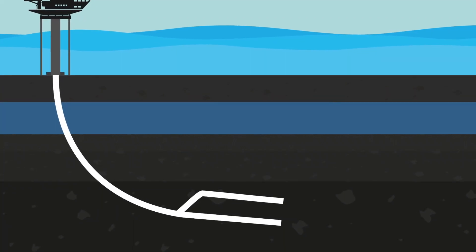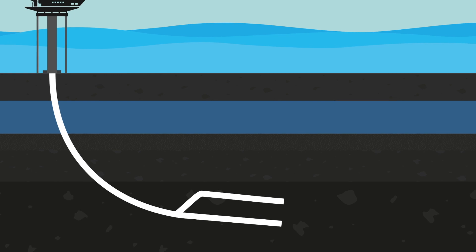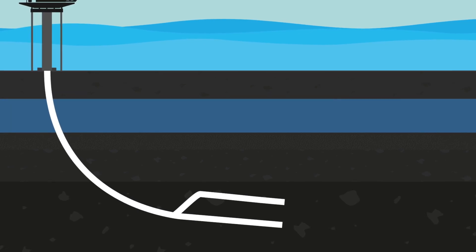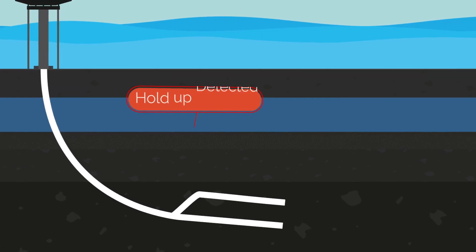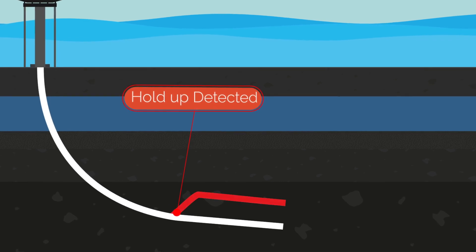The well features a smart completion involving an inner completion window aligned to a milled-out casing window, enabling access to the upper lateral for acid stimulation to enhance production.